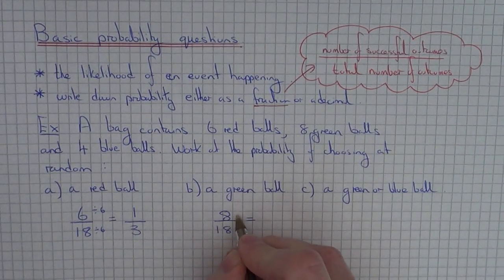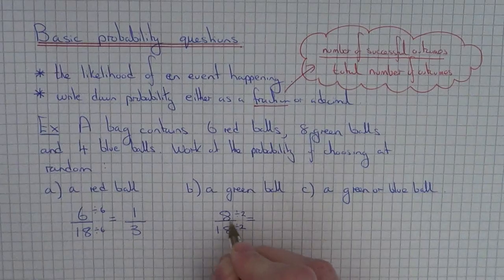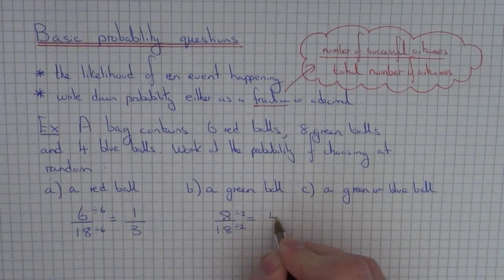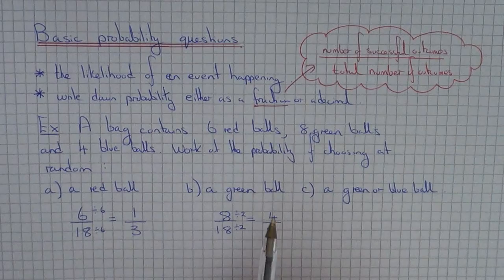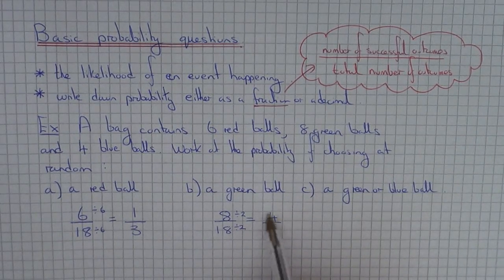Again we can simplify this fraction if we divide it by 2. So 8 divided by 2 is 4 and 18 divided by 2 is 9. So the probability of picking a green ball at random is 4/9.